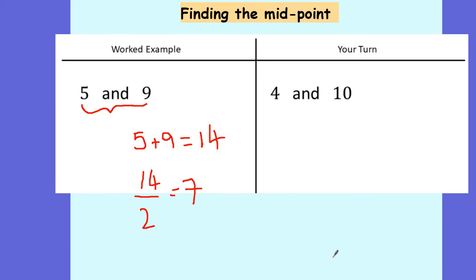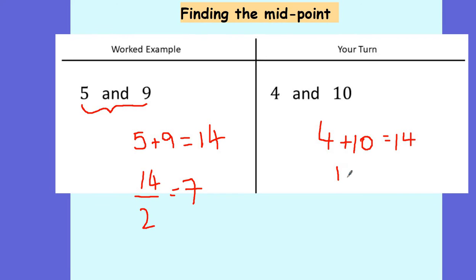Over to you guys. In your dark blue books, can you write the title 'Finding the Midpoint' and then pause the video for a minute and have a look at this example for me. I'm going to start by adding together those two numbers. 4 plus 10 gives me 14. Then to find the midpoint, I need to do 14 divided by 2, and that's going to give me 7. So both of those sets of numbers have a midpoint of 7.